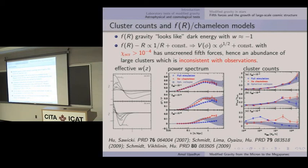Regarding lensing as a probe: for chameleon theories or F(R) theories, which are conformally coupled, photons wouldn't see the chameleon field at all. So if you use something like redshift-space distortions in correlation with weak lensing, your photons probe one potential and your velocities probe something different. That has the potential to be a powerful probe. I'm not aware of calculations that have been done on this, but I'm very interested in doing simulations and pushing this out to smaller scales.